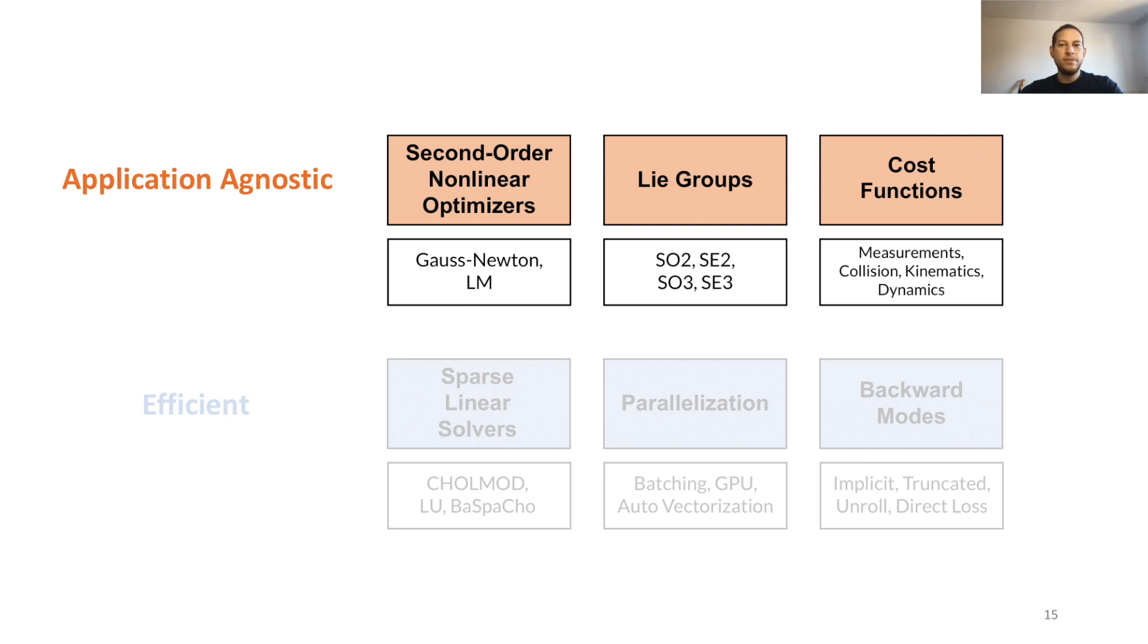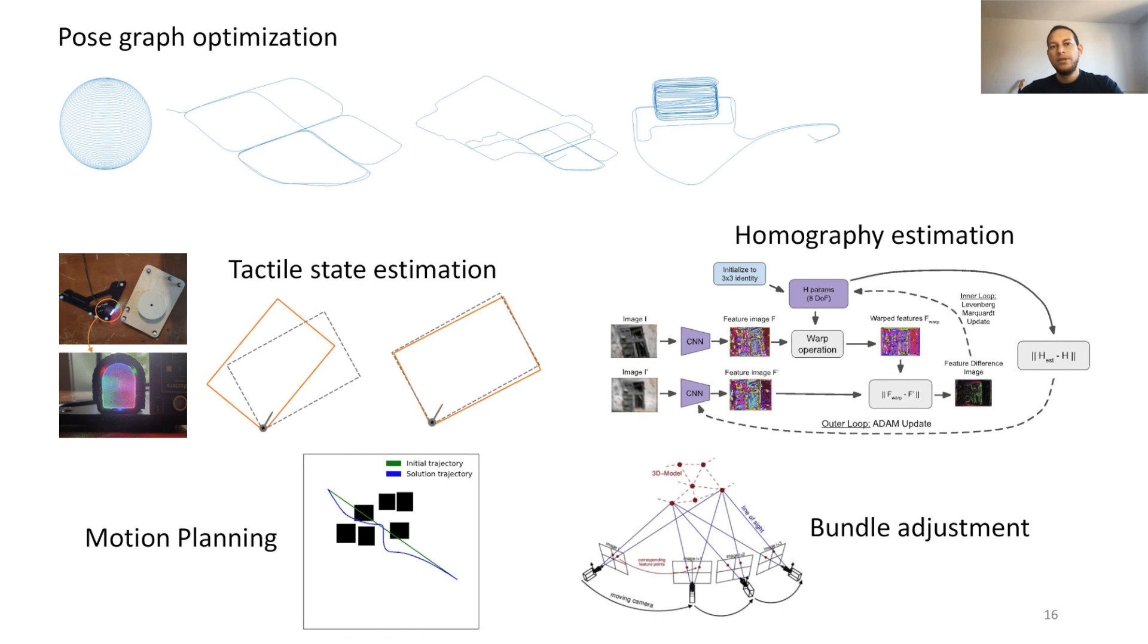Our interface provides approximate second-order optimizers like Gauss-Newton and Levenberg-Marquardt, differentiable Lie groups for representing 2D, 3D positions and rotations, and access to many common costs in robotics and vision, including support for custom in-place costs. With these features, we can easily build custom optimization layers and plug them into any neural architecture.